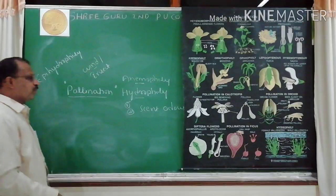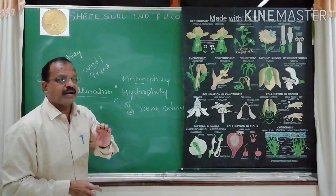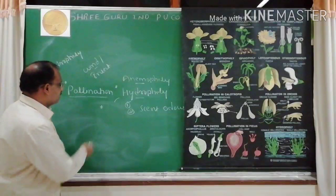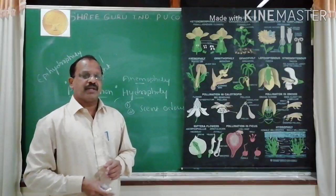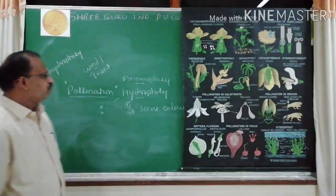For competitive exam purposes, remember two more points about hydrophily: pollen grains are generally large and ribbon-shaped, and they are protected from wetting by a mucilaginous covering.